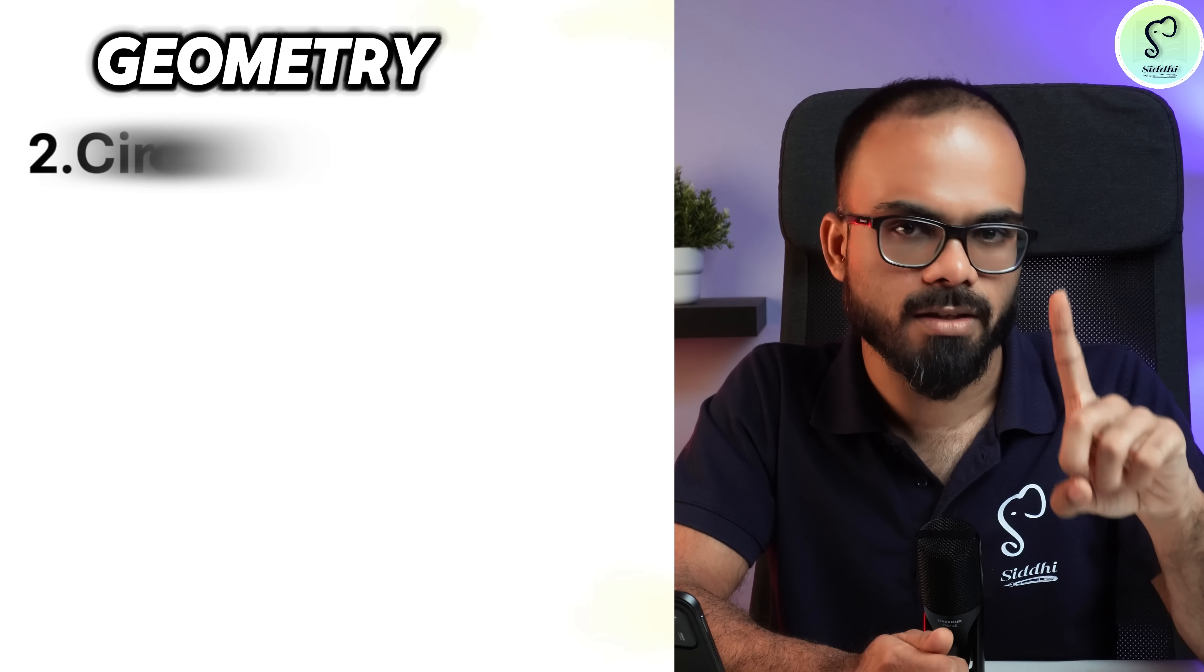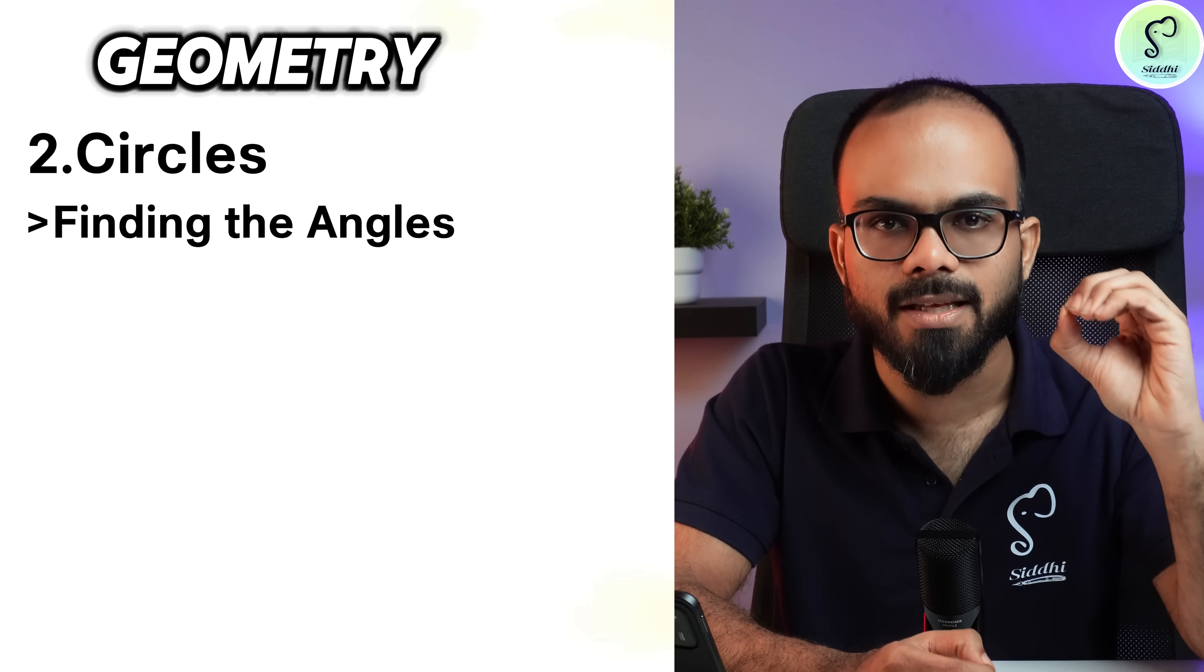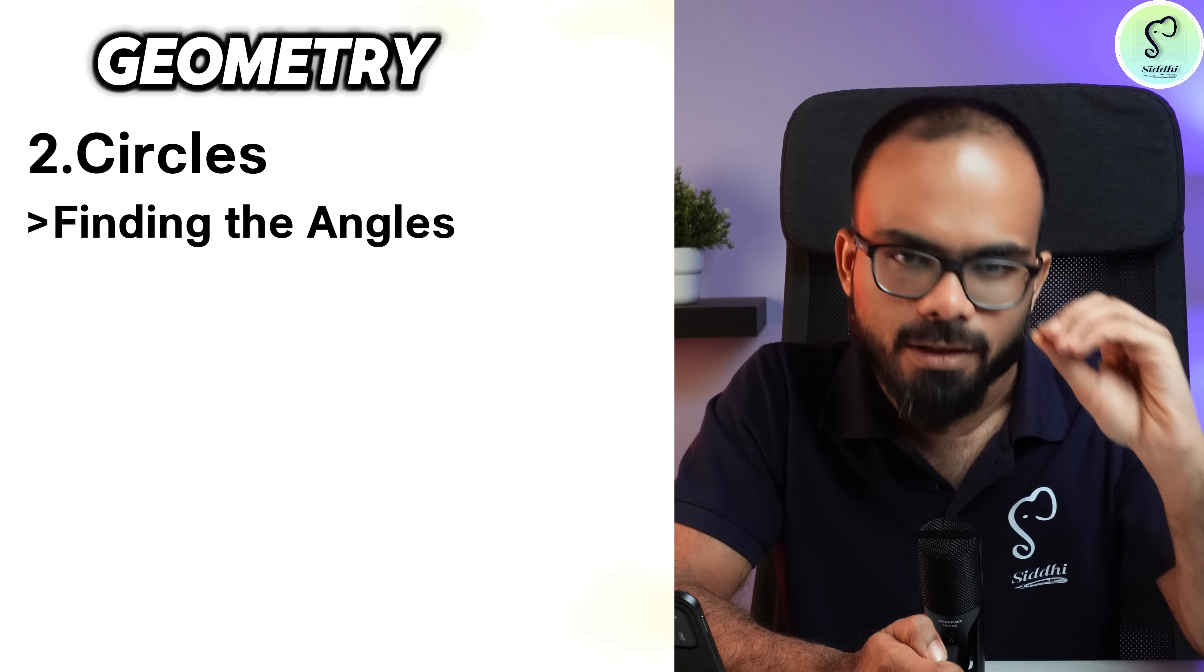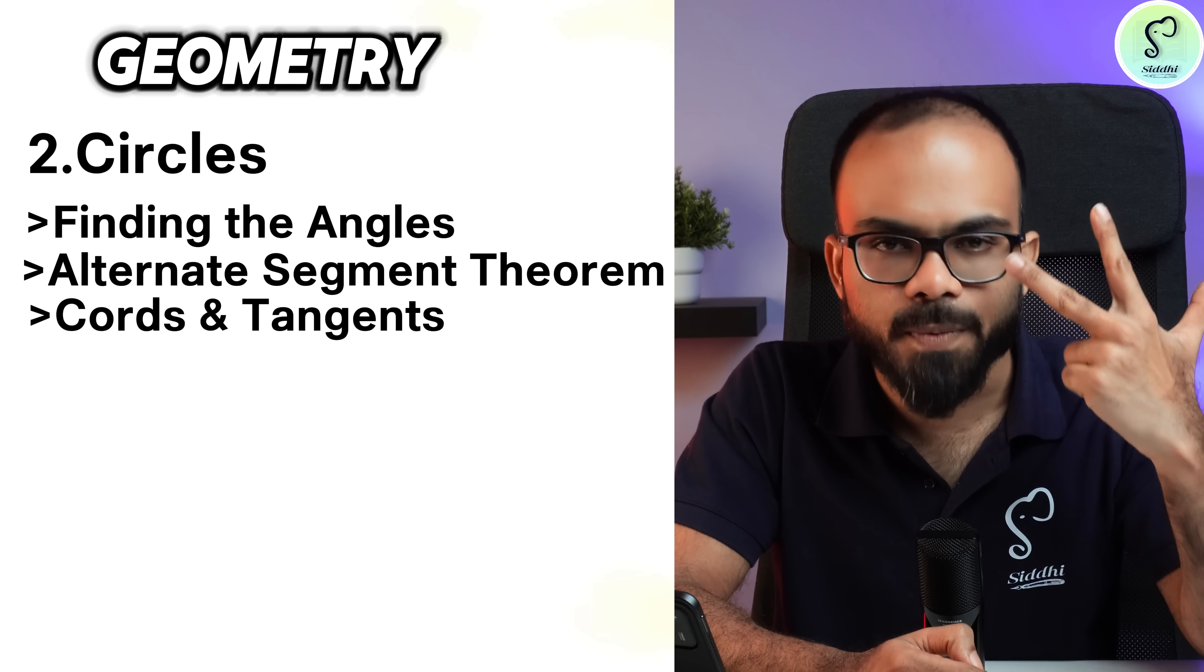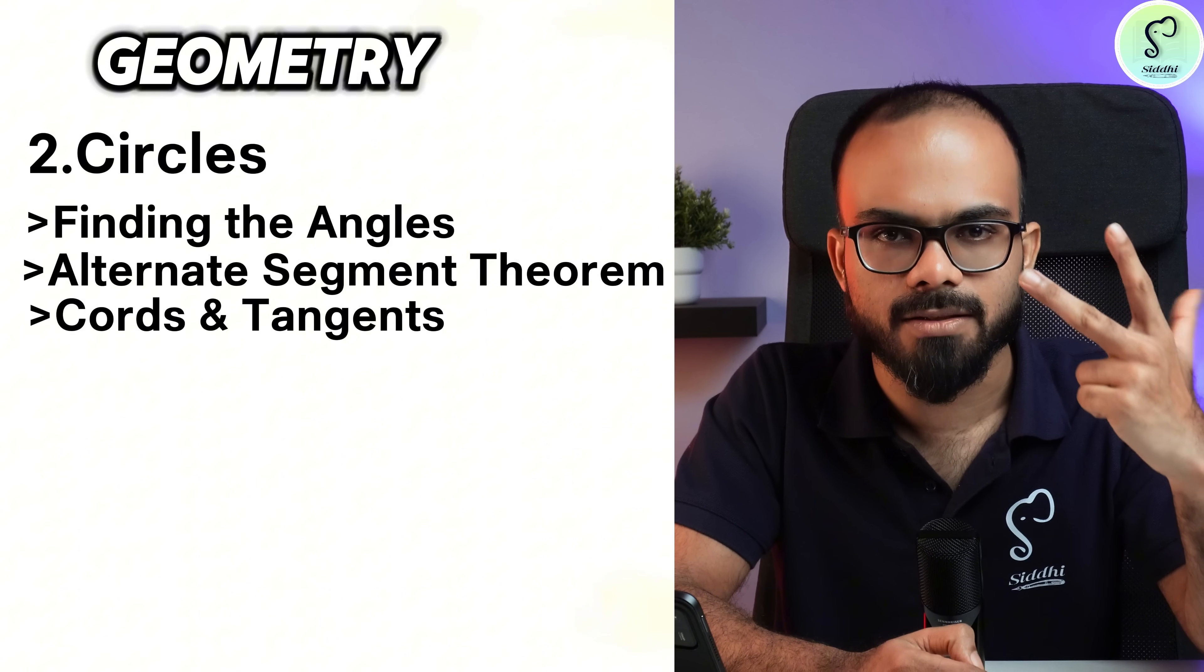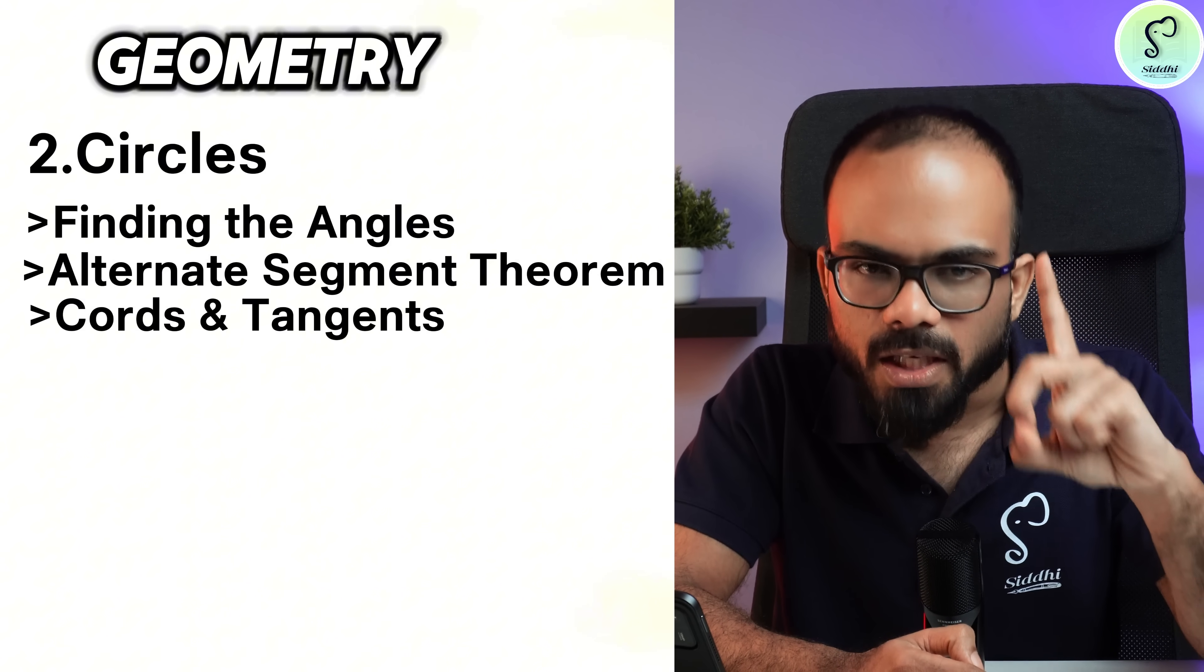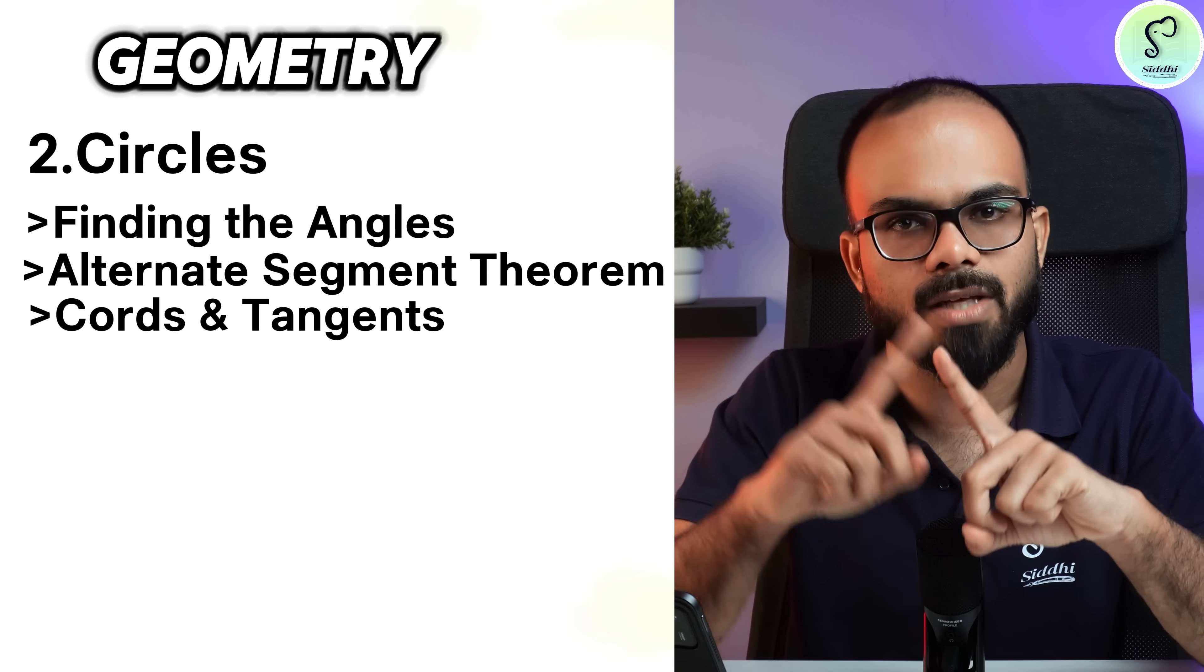Then the next topic is circles. In circles, important concepts are finding the angle in different segments and the angles with respect to various centers. Then alternate segment theorem, chords and tangents, especially tangents are important. In tangents, the two principles: pa into pb equals pc into pd, pd square equals pa into pb, these two concepts and their applications.